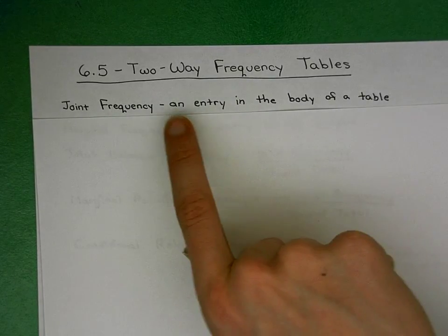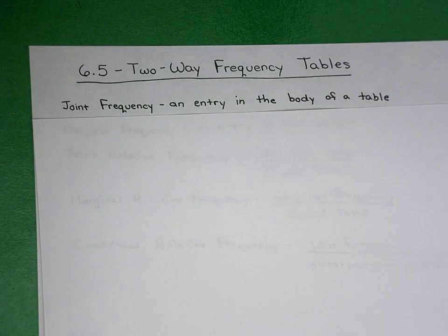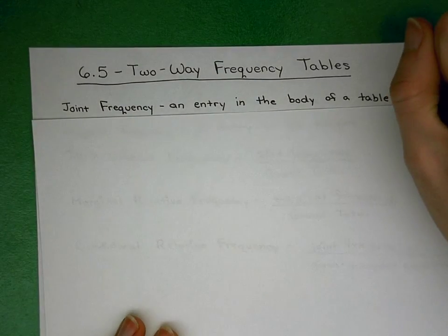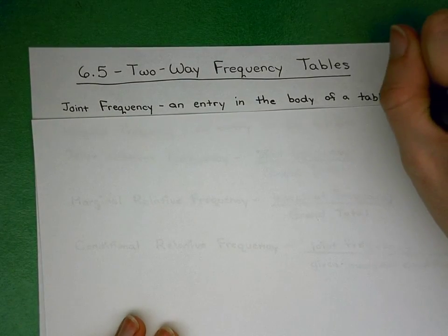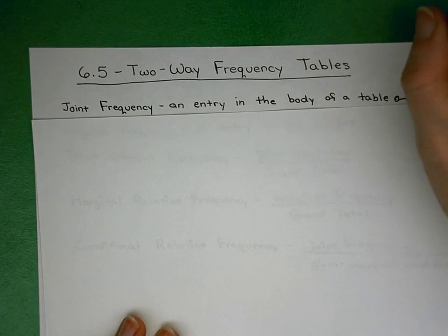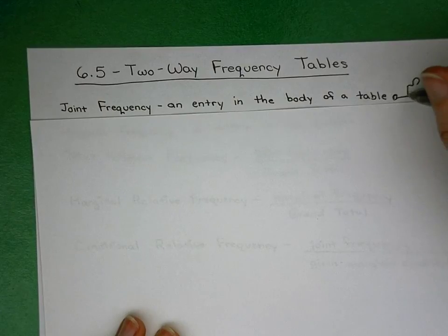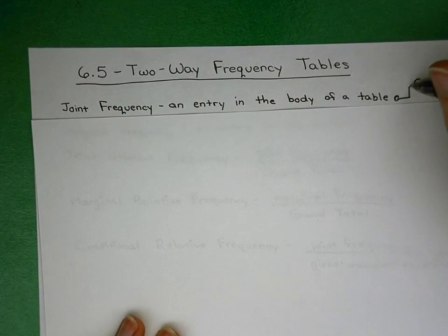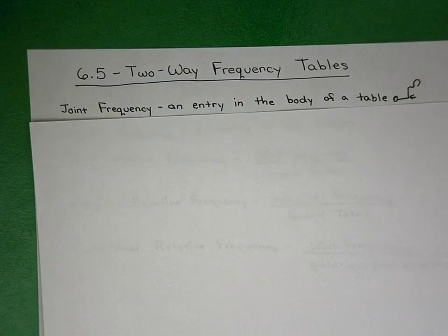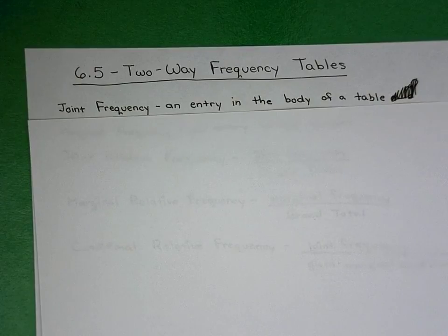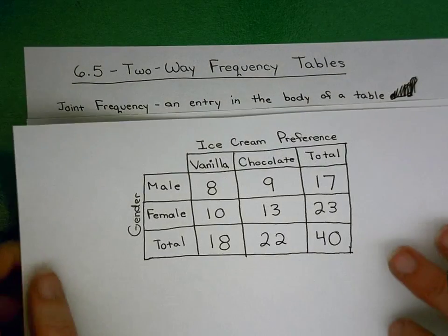Joint frequency is an entry in the body of a table. I like to think of this like an elbow joint — you hold your elbow up, and that intersection point is a joint. So we're going to be looking for an intersection, an entry inside the body of our table. This is why I'm a math teacher and not an artist.